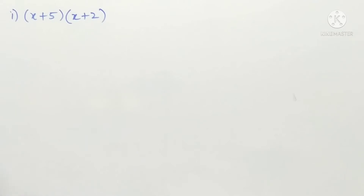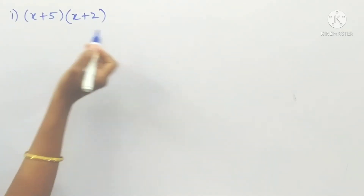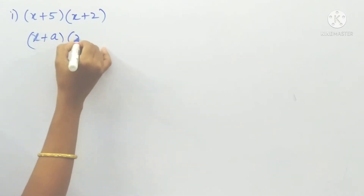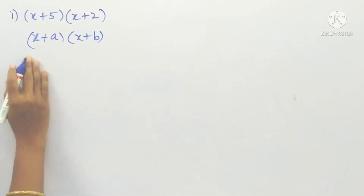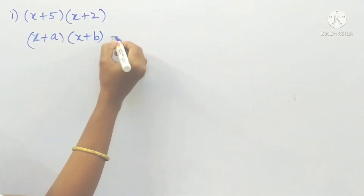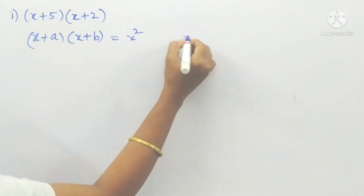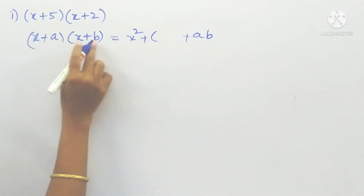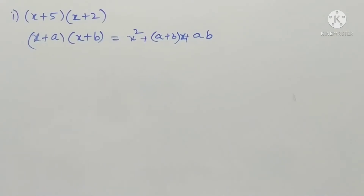You know the algebraic identities. One of them is in the form of (x + a)(x + b). So what is the formula for (x + a)(x + b)? It is x² plus (a + b)x plus a·b.